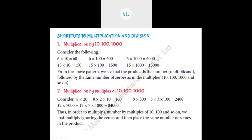For multiplication by multiples of 10, 100, and 1000: consider 8 times 20. Since 20 is 2 times 10, this is 8 times 2 times 10, which is 16 times 10, giving 160. For 8 times 300: 300 is 3 times 100, so 8 times 3 is 24, and 24 times 100 is 2400. The method is to multiply ignoring the zeros first, then place the same number of zeros in the product.